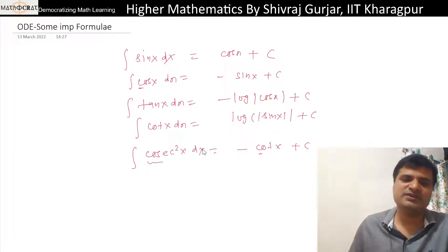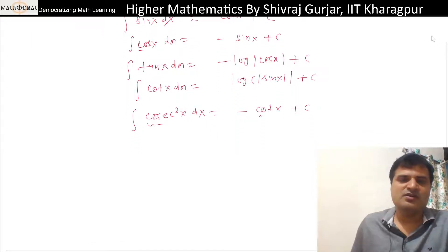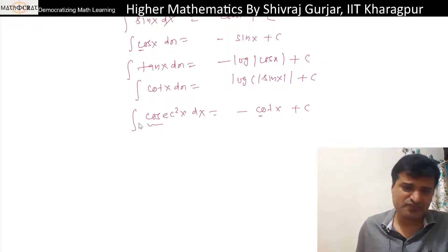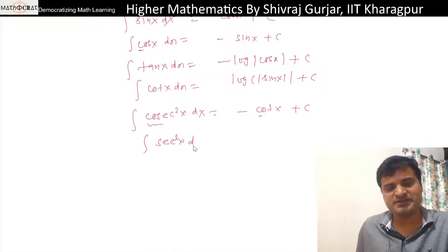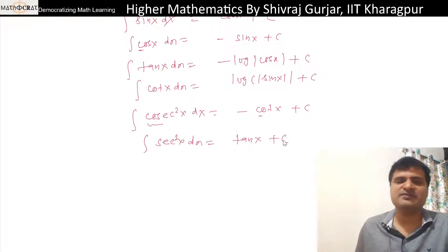Sec square x dx will be tan x plus C, because the differentiation of tan x is sec square x. This is the normal situation everyone must be aware of.